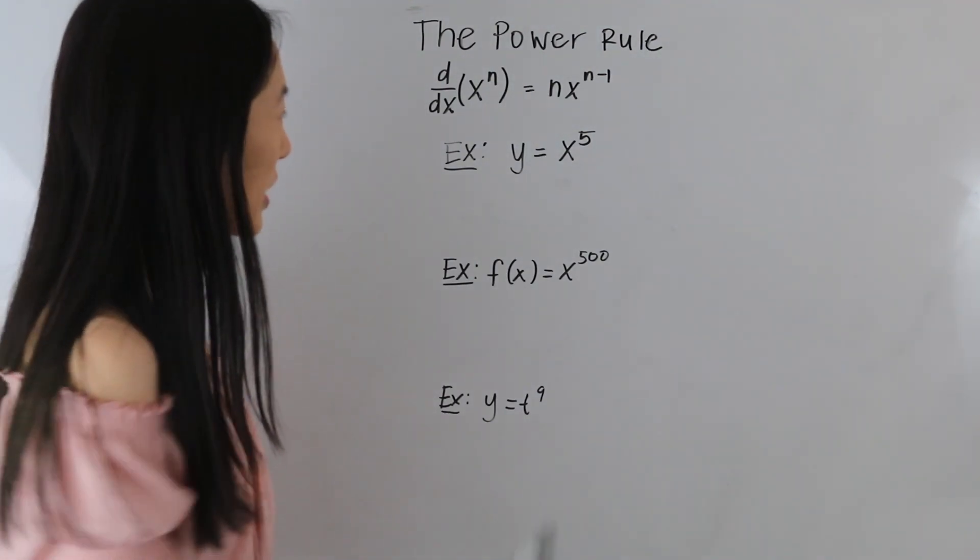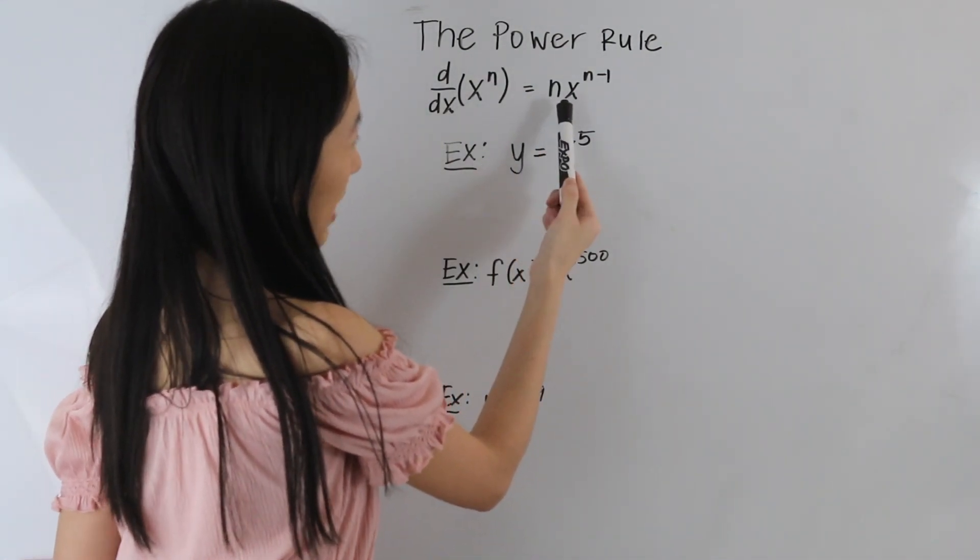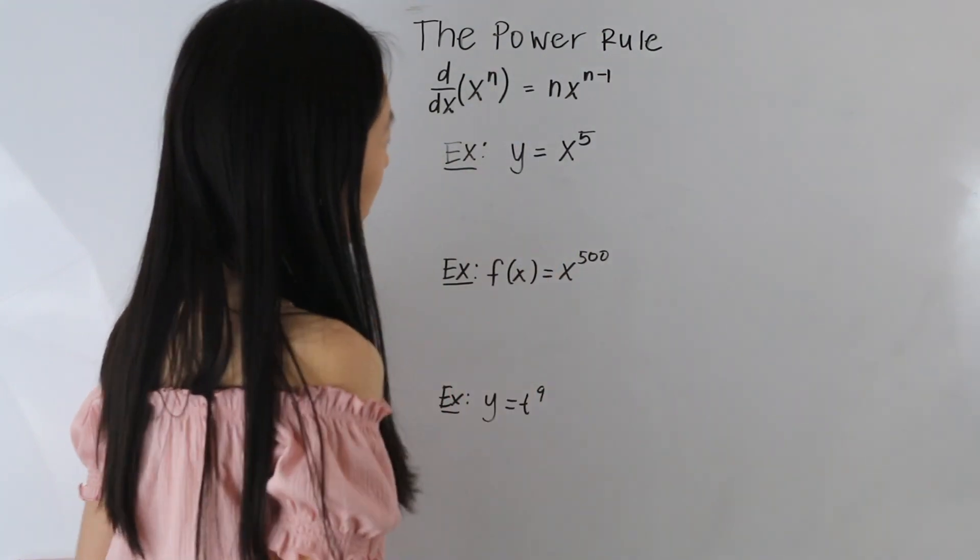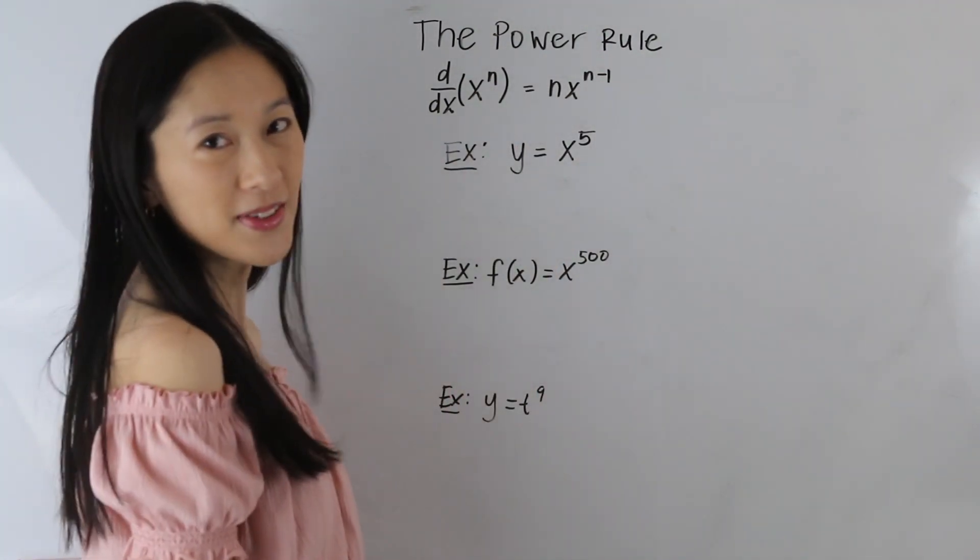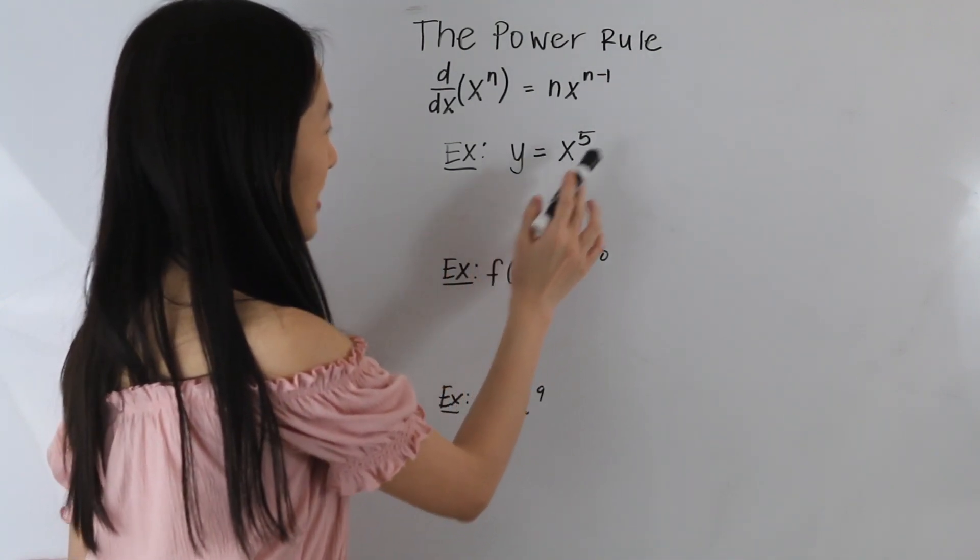So essentially what we're doing is we are bringing down this power here, and we are multiplying by x, and then we're subtracting 1 from the power. So let's go ahead and apply this to some examples. So in this first example here, we have y is equal to x to the fifth.